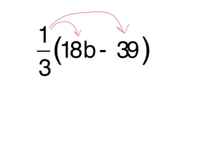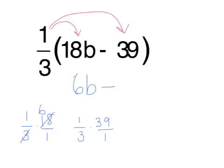All right, so if I take one-third of 18, one-third times 18. Remember, simplify, then multiply. 3 goes into 18 six times, so I'd be left with 6b. Minus one-third times 39.